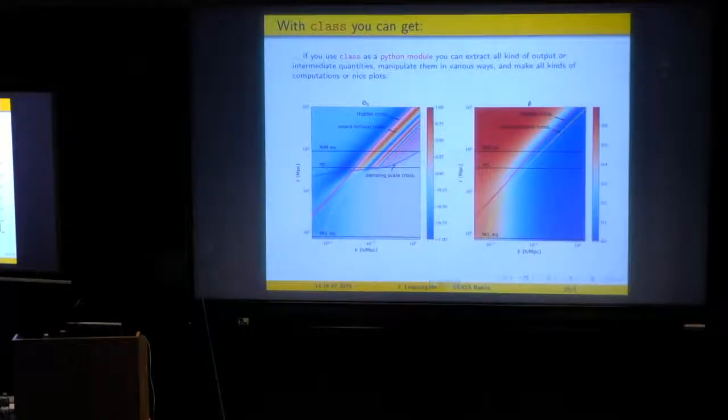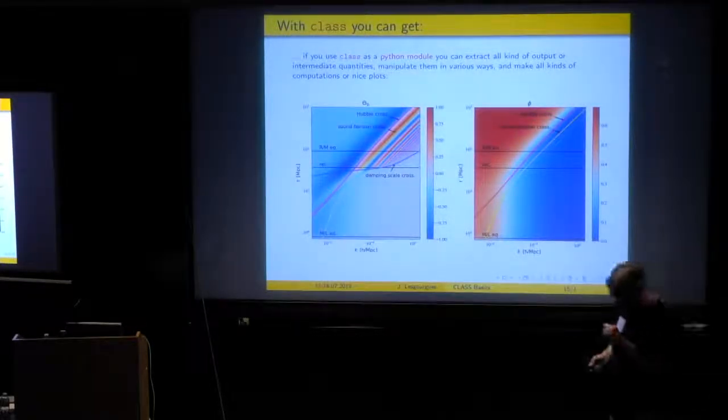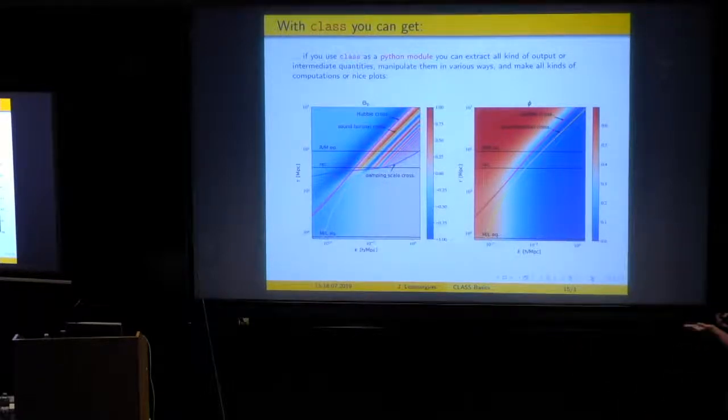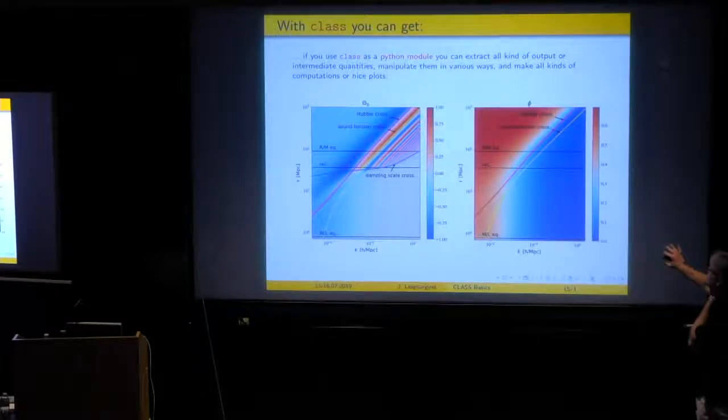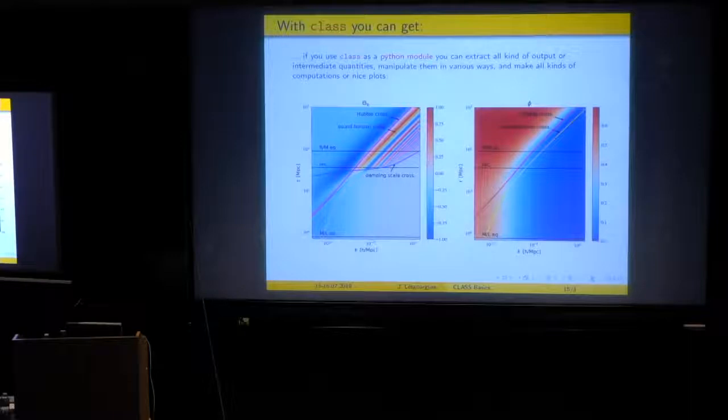So the exercise session will train you on doing this also. You can do more advanced stuff. For instance, this is a script that is publicly available. When you download CLASS, you have examples of scripts. This is one of the most sophisticated that you have when you download CLASS. The colors show the amplitude of some perturbations, more precisely transfer functions, for the photon density and for the metric fluctuation phi, as a function of conformal time, going from the early universe to today, and wave number coming from large wavelengths to small wavelengths. And with this kind of colors, you can really appreciate the evolution of these perturbations. And you can then use this for your cosmology course.